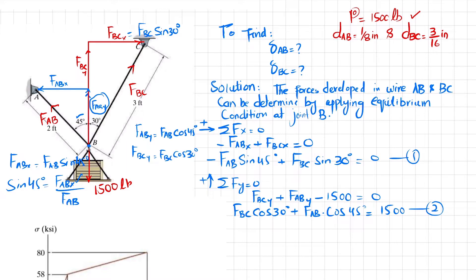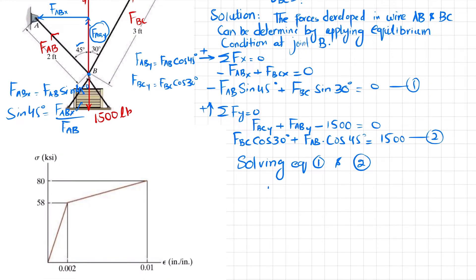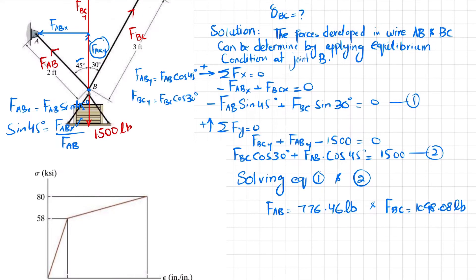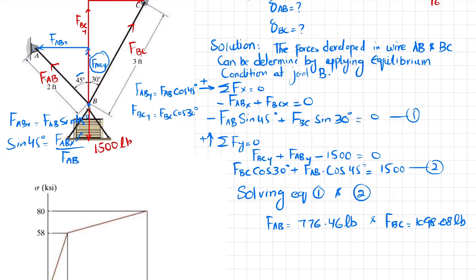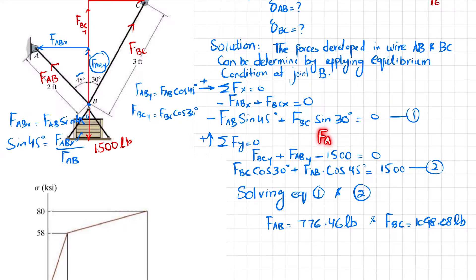Equations one and two are simultaneous equations. Solving them simultaneously — by expressing FAB in terms of FBC from equation one and substituting into equation two — you get FAB = 776.46 pounds and FBC = 1098.08 pounds.